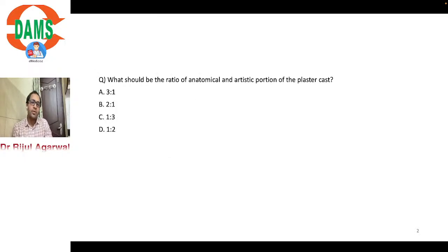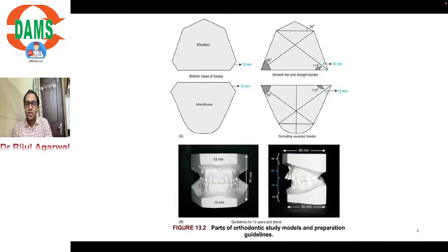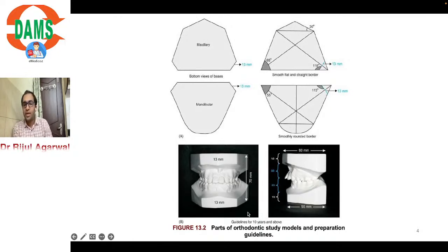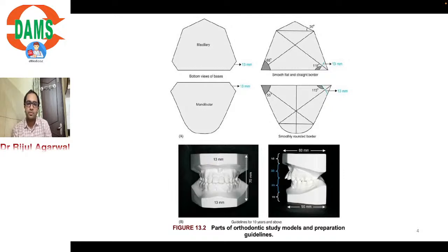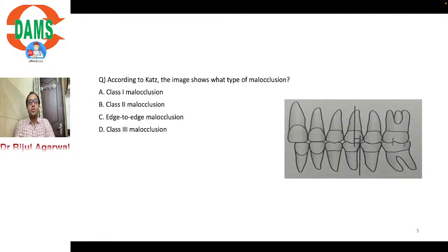Related questions that can be asked: the total dimension of the maxillary and mandibular cast should be 70 mm. The length of the maxillary base should be 60 mm and that of the mandibular base should be 55 mm. If dividing by ratio, the one-third ratio should be of the base region and two-thirds should be of the anatomic region. Next question: according to Catt's classification, what type of malocclusion is shown in the image?